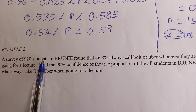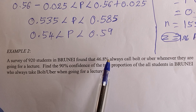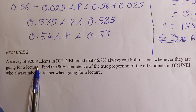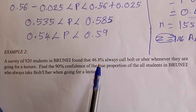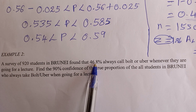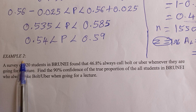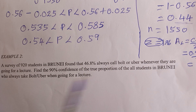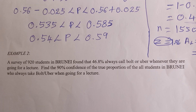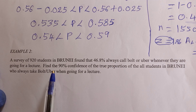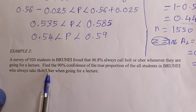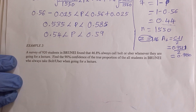Now let's look at example two. A survey of 920 students in Brunei found that 46.8% always call a boat or Uber whenever they are going for a lecture. Find the 90% confidence interval of the true proportion of all students in Brunei who always take a boat or Uber when going for a lecture.